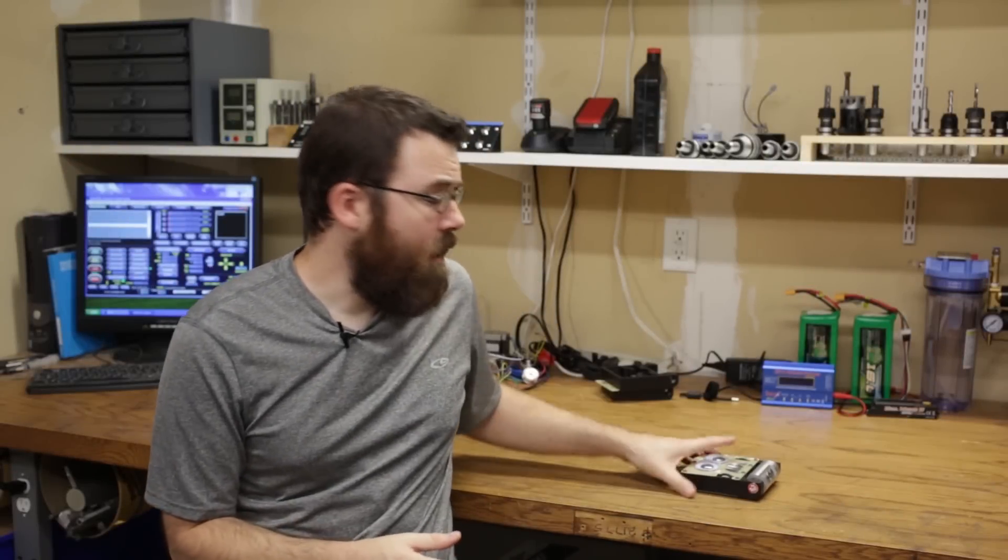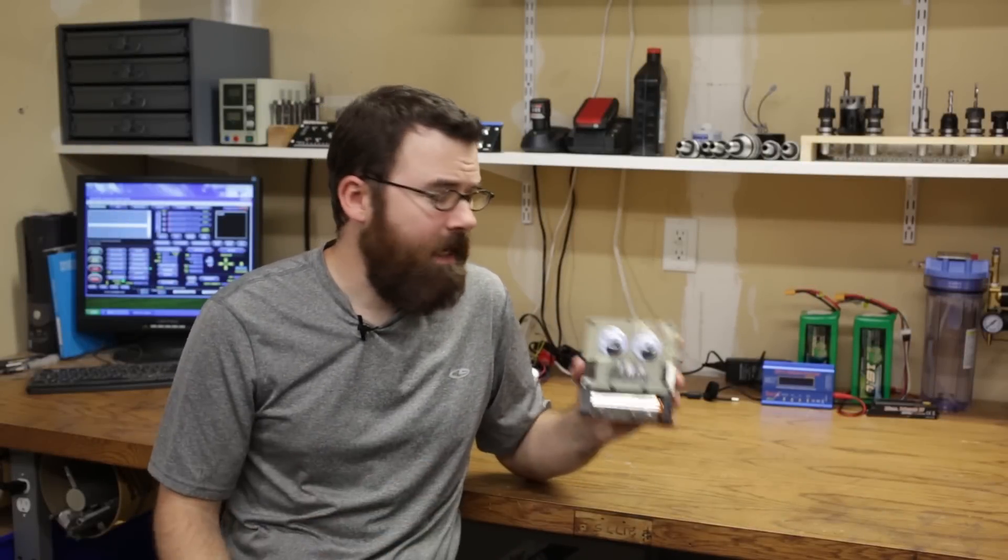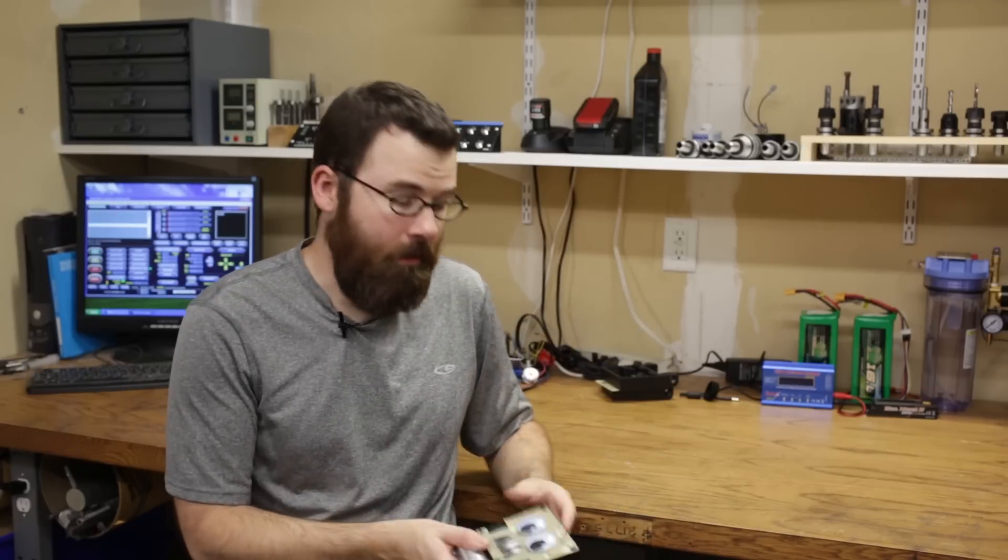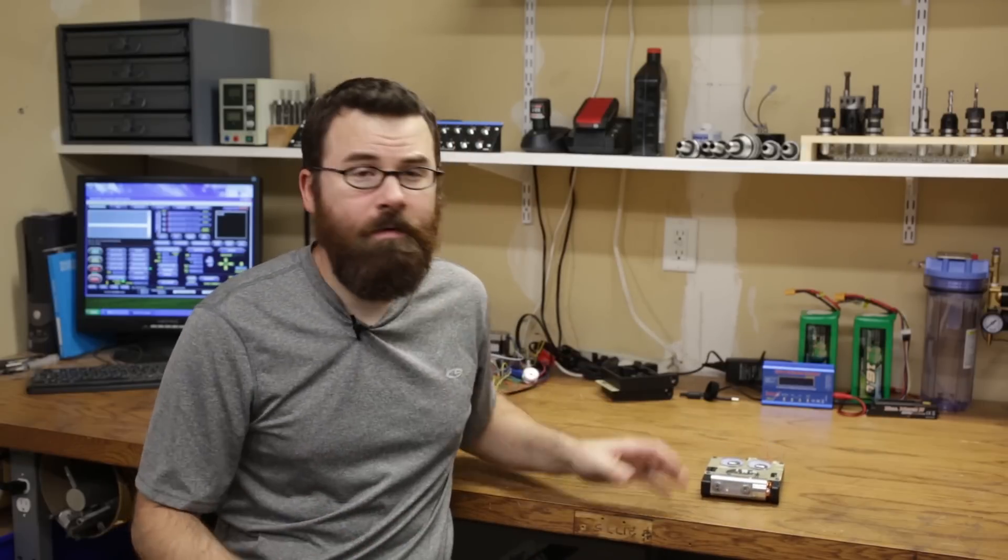Hello everyone, this is part 3, the final chapter in the Sergeant Cuddles one pound antweight combat robot build. In this part we're going to take everything apart and show you all the electronics that make this thing tick.